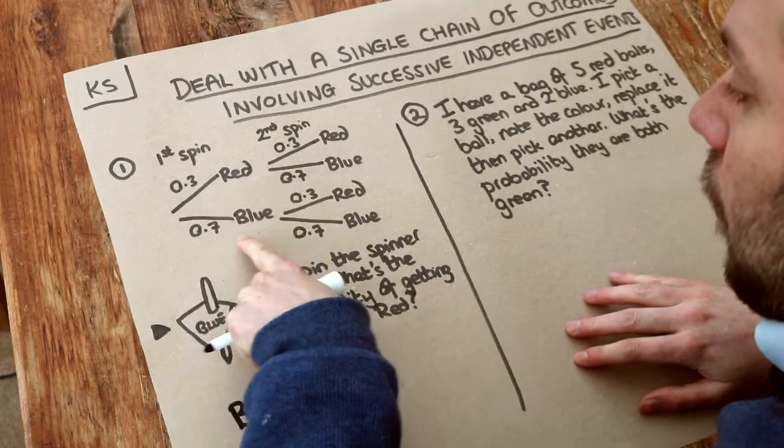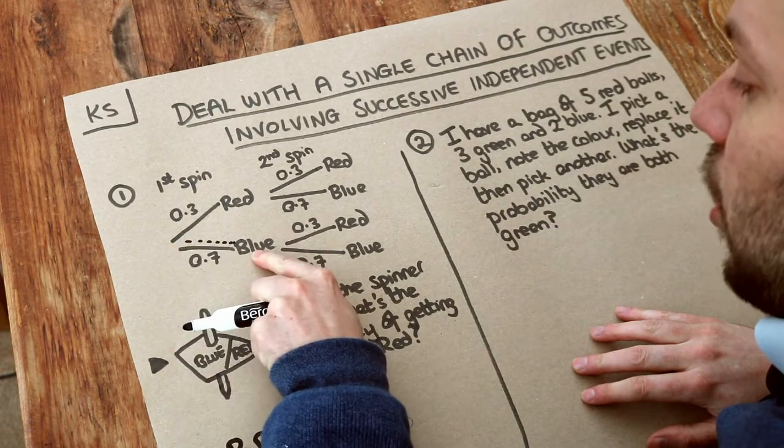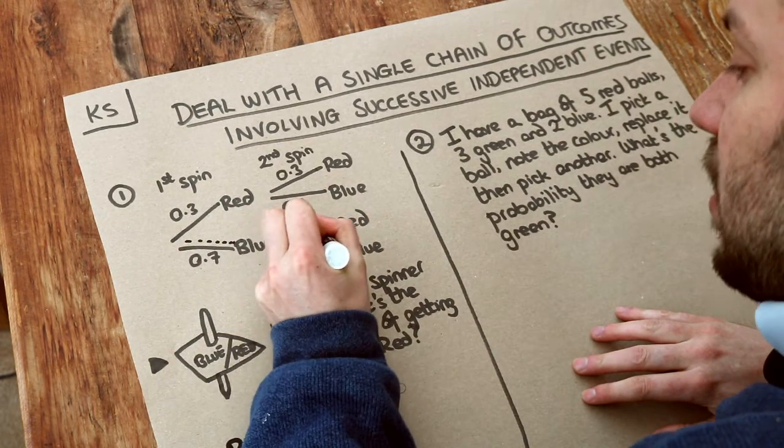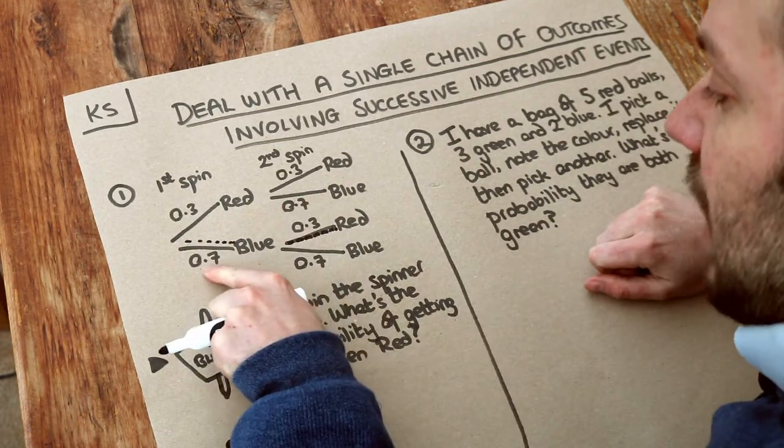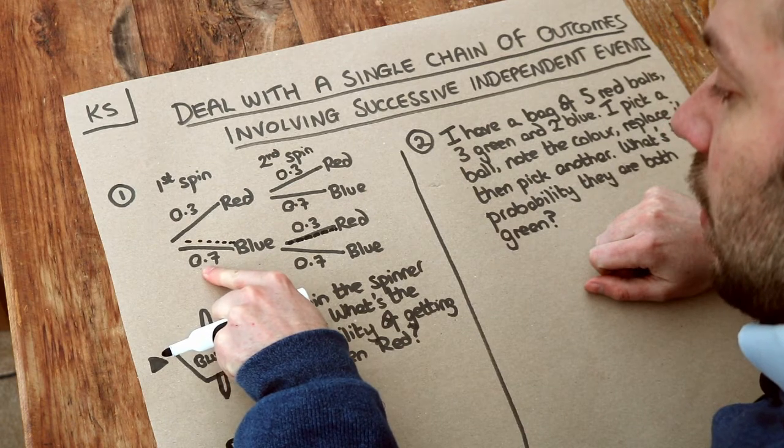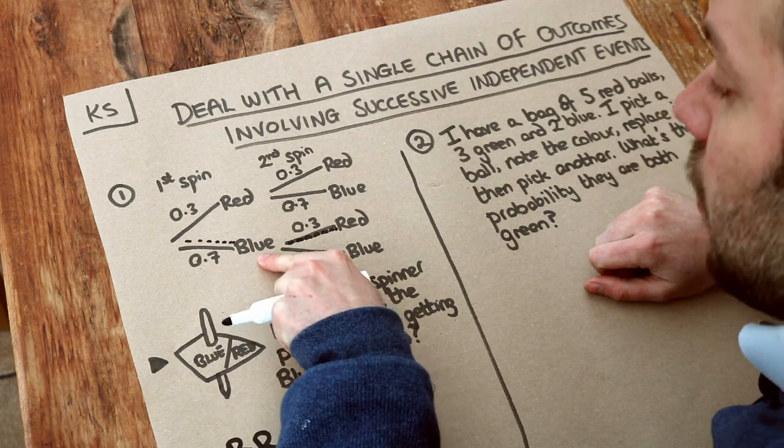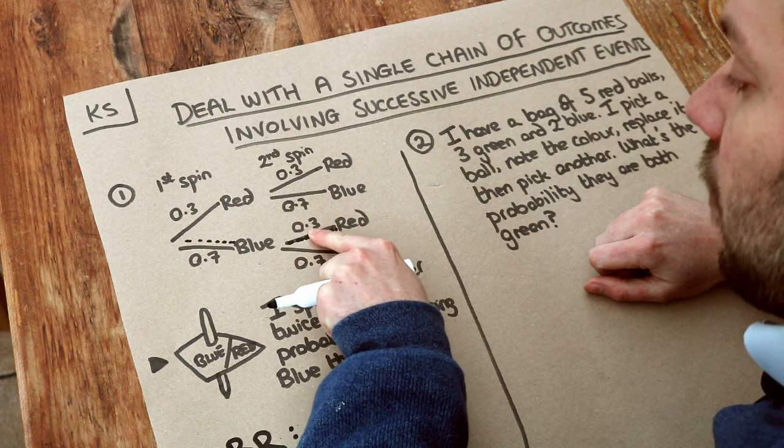So let's follow the tree here. We're first spinning a blue and then we're spinning a red. So the probability of getting blue on the first spin is 0.7. Then if we spun a blue, the probability of spinning red on the second spin is 0.3.